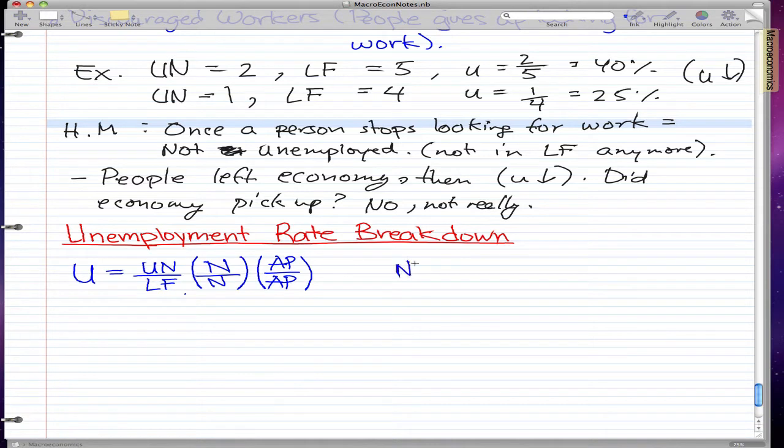Now N represents the people not working, so all the people that are not working is represented by N. So that is equal to UN, the unemployed, plus the NLF, the people that are not looking for work.